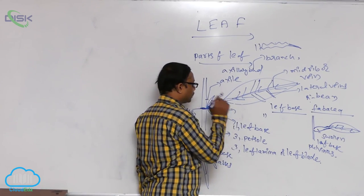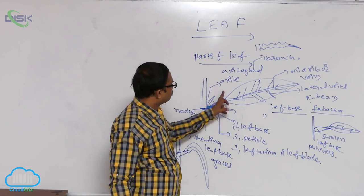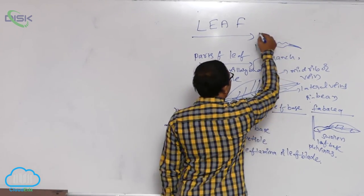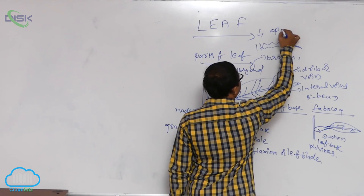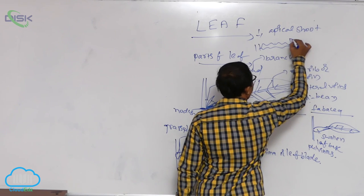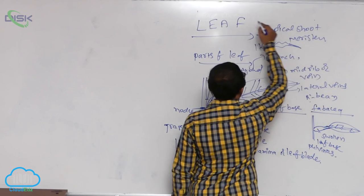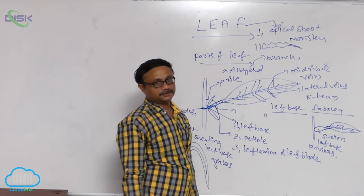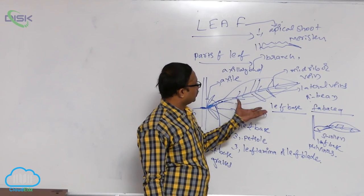These are the parts of the leaf. Generally, leaves are produced from the apical shoot meristem. Leaves are produced from the apical meristem — that is an important point. So these are the parts of the leaf.